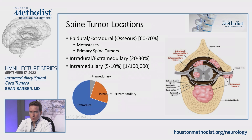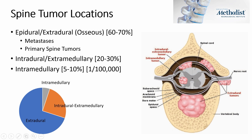Spine tumors can occur in a lot of different locations. The most common location is extradural or epidural. These can be metastases, which is most common, or primary spine tumors like chordomas or osteosarcomas. Metastases are the most common of all spine tumors — about 60-70% are epidural.